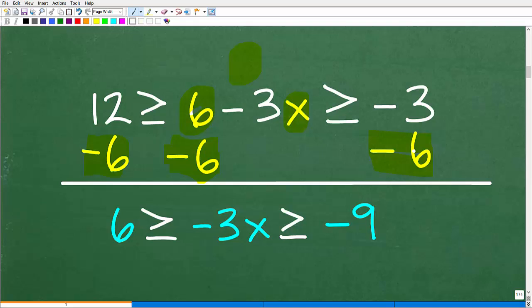This is a typical format that you would want to write your solution as. Now you're going to simply add down in a column manner. So we have 12 - 6, which is 6. And then 6 - 6 is 0, and I'm left with -3x in the middle here. And then -3 + -6 is -9.